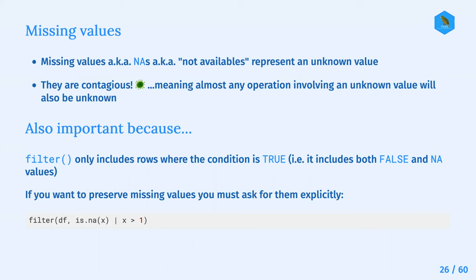If you want to preserve missing values, you have to ask for them explicitly - for example, using the is.na() function. In this example, we filter a data frame DF with the condition is.na(x) or x greater than one.